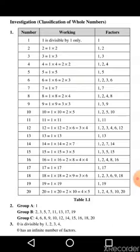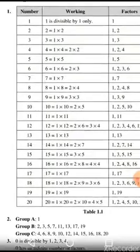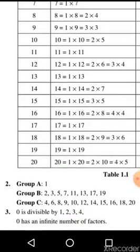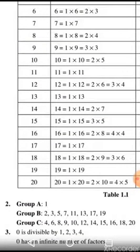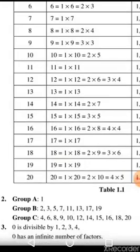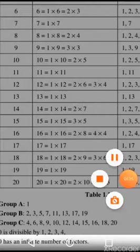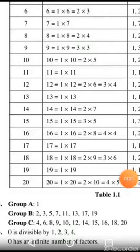Up to 20, we can see all the factors of the numbers. In Group A, there are numbers which have only 1 factor. In Group B, there are numbers which have only 2 factors. And in Group C, there are composite numbers.